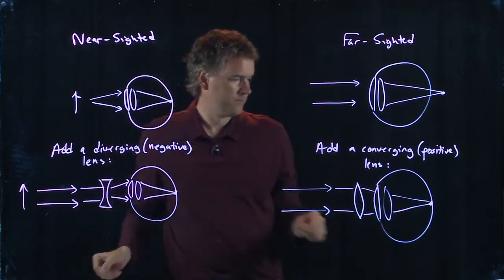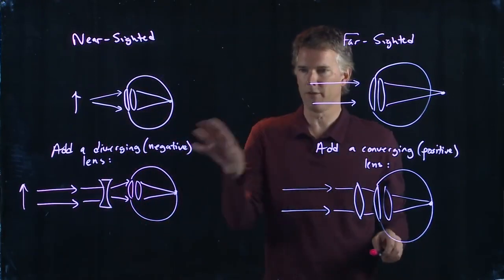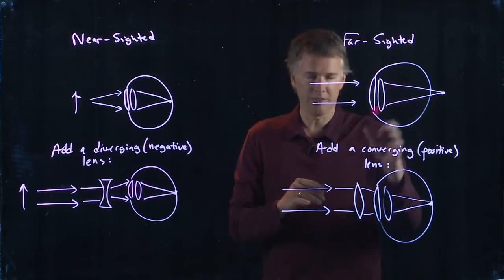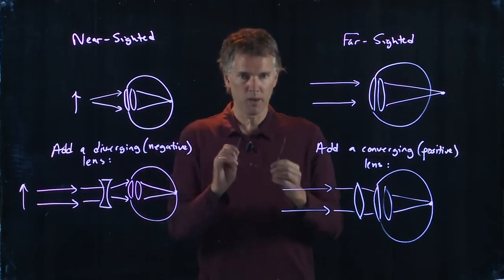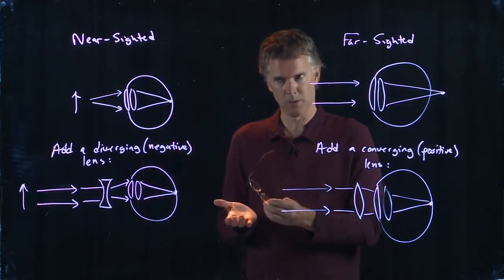The other thing to know about nearsighted versus farsighted is a positive lens means you can focus light down to a point.